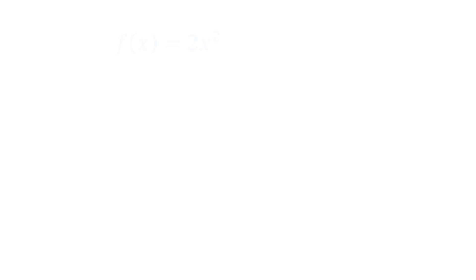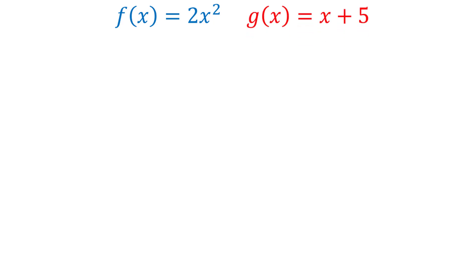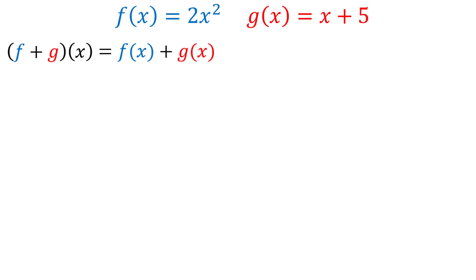For example, let's say we have the functions f(x) = 2x² and g(x) = x + 5. The way we represent the addition of these two functions is f + g of x. All this means is that we need to add the two functions together, so f + g of x is equal to f(x) + g(x), which gives us 2x² + x + 5.